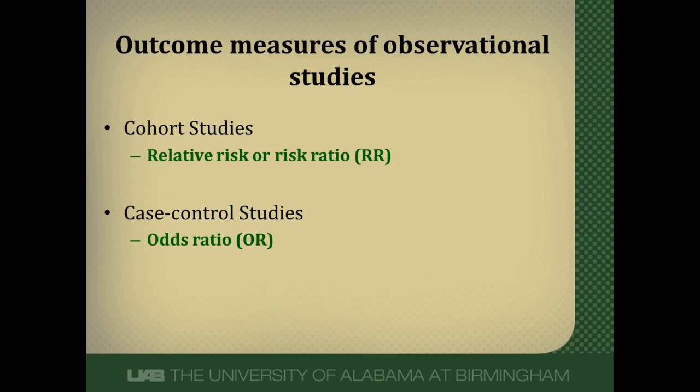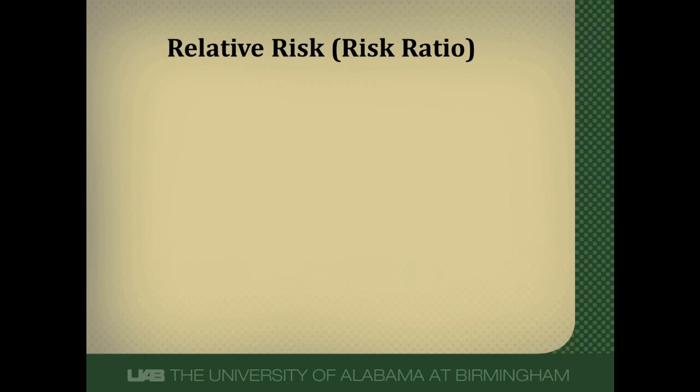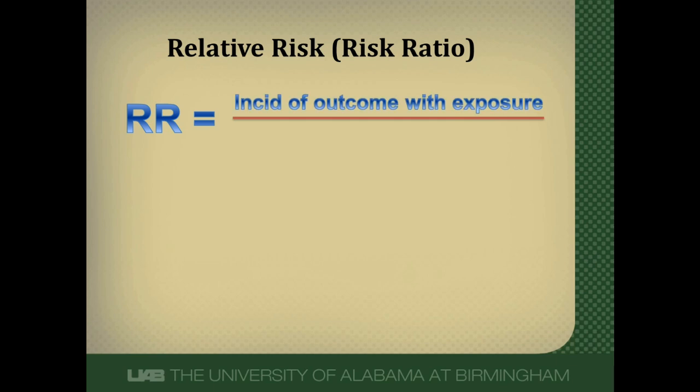The outcome measures in observational studies are a relative risk or risk ratio in cohort studies, and an odds ratio in case control studies. Relative risk is just that — it's a ratio. In the numerator, we have the incidence or rate of development of disease in persons who are exposed, divided by the incidence or rate of developing disease in those who were not exposed.